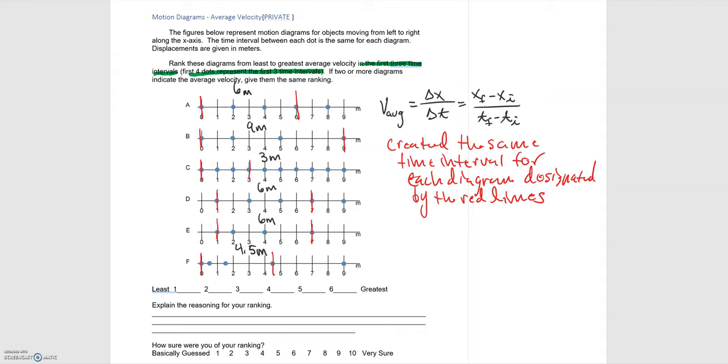Now that we've determined the displacements for each we can rank them starting with the smallest, we have C. Moving on we have F which is 4.5, and then we have a whole lot of sixes so A, D, and E. Then we have B to round everything out at nine meters.